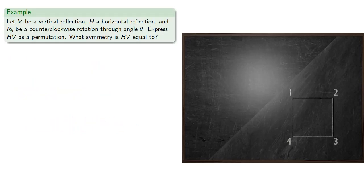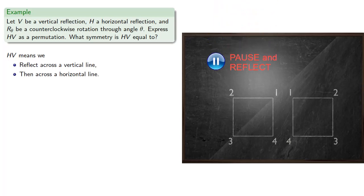For example, let V be a vertical reflection, H a horizontal reflection, and R-theta be a counterclockwise rotation through an angle of theta. And let's express HV as a permutation. And what symmetry is HV equal to? So HV means we're going to reflect across a vertical line, then reflect across a horizontal line.